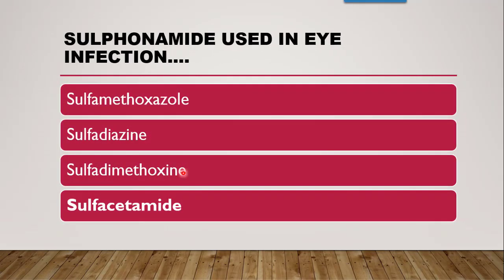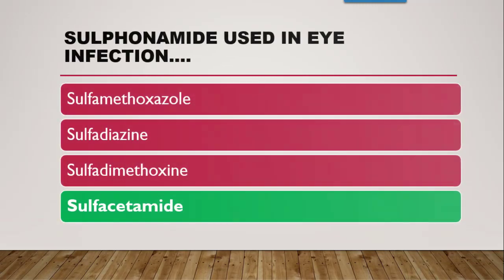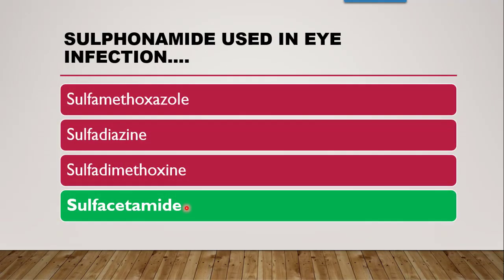Next question: the sulfonamide used in eye infections is — sulfamethoxazole, sulfadiazine, sulfadimethoxine, or sulfacetamide? The correct answer is sulfacetamide sodium. According to the classification of sulfonamides based on uses, sulfacetamide is used in the treatment of eye infections.